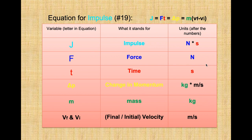Jumping back to the equation: the equation for impulse is number 19 on our formula sheet. It looks rather long, but you don't use every single part — you use whatever you need for that specific problem. The variable for impulse is J. The unit for impulse is newtons times seconds, because impulse is essentially the amount of force felt over the duration of time — F times T. The unit for force is newtons and the unit for time is seconds, so those units combine to give you newtons times seconds.